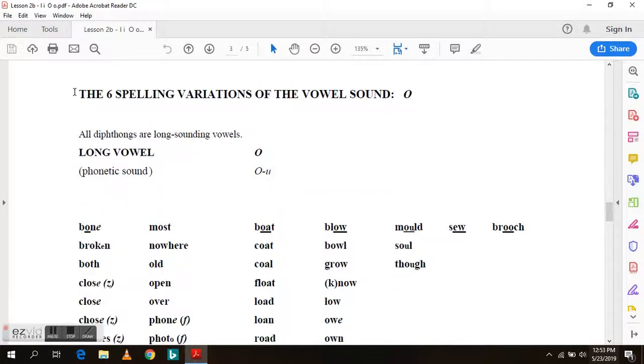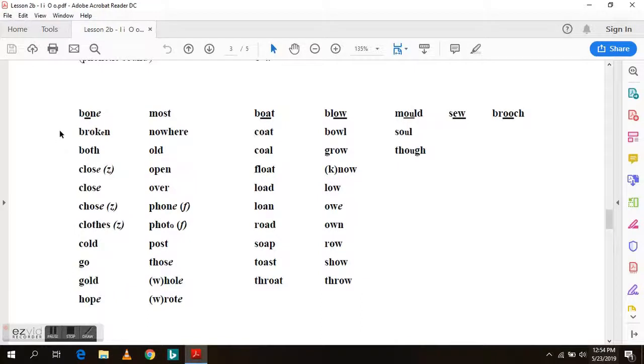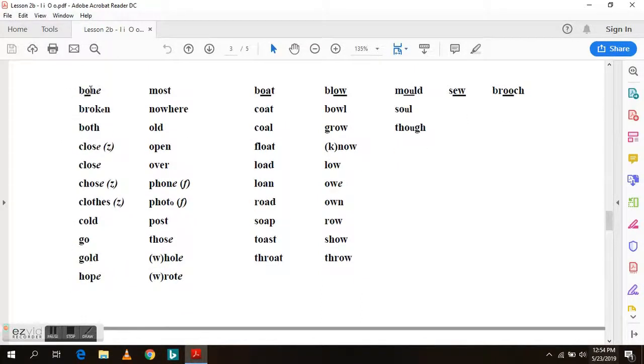Now the six spelling variations of the vowel sound O. It is also a long vowel and a diphthong and it sounds like O. So as a single O, as an OA, as an OW, as an OU, as an EW, and as a double O.